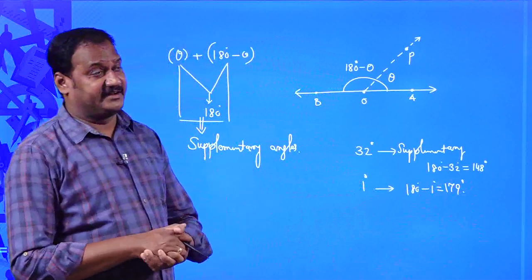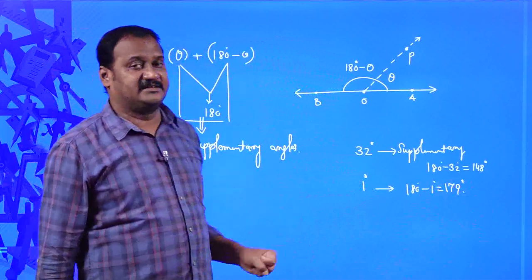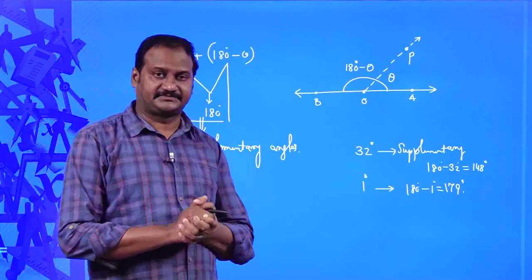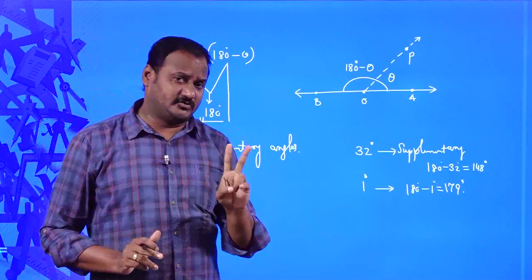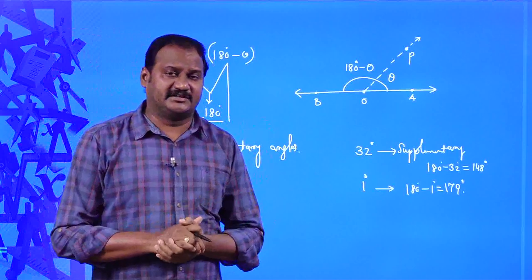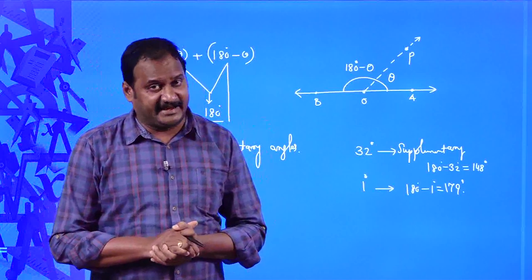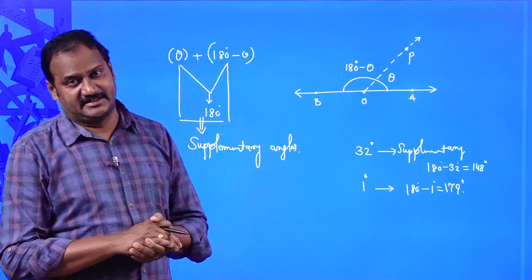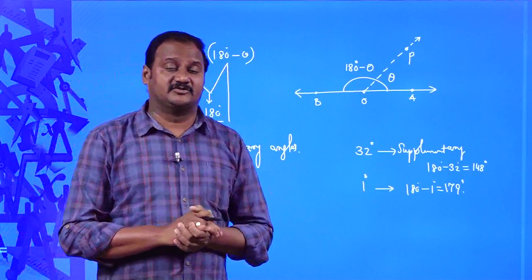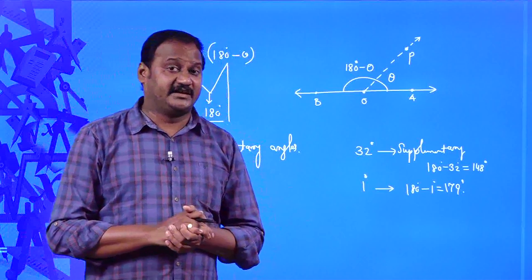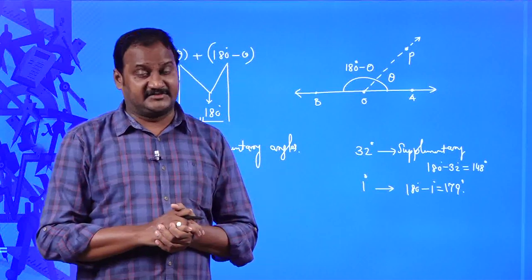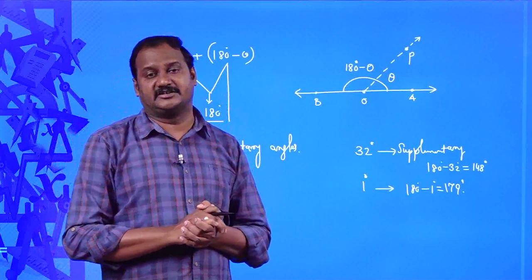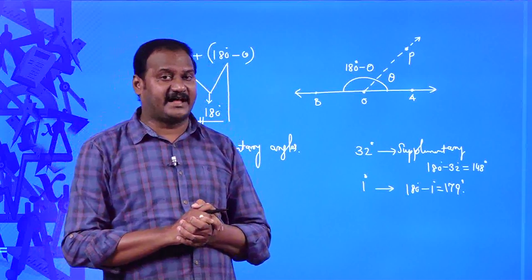So this way we define complementary and supplementary angles. To recap: complementary angles means if the sum of two angles is equal to 90 degrees, both are said to be complementary angles — they may be different or the same, but the sum is 90 degrees. If the sum of two angles is equal to 180 degrees, then both are said to be supplementary angles.